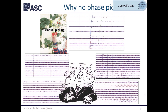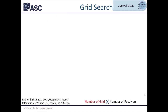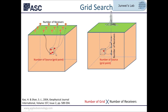The idea here is to replace the phase-picking by grid search. There are many variants of location algorithms based on grid search — for example, the source scanning algorithm published in 2004. The basic idea of grid search is first to define a search volume, a region where microseismicity likely occurs, then calculate the travel time table for each pair of grid point and receiver. The grid point that best matches the waveform is considered the location of the microseismic event.